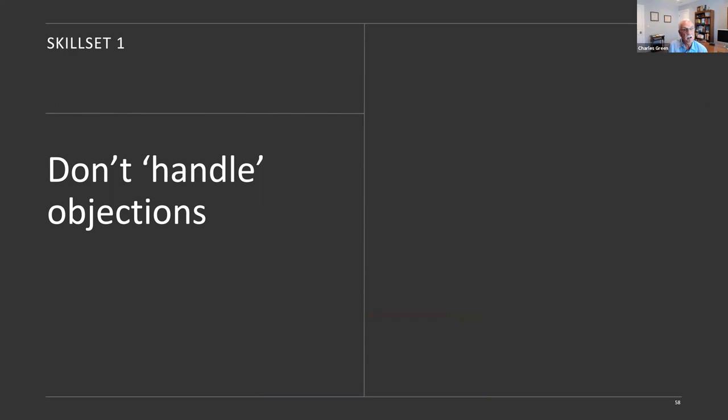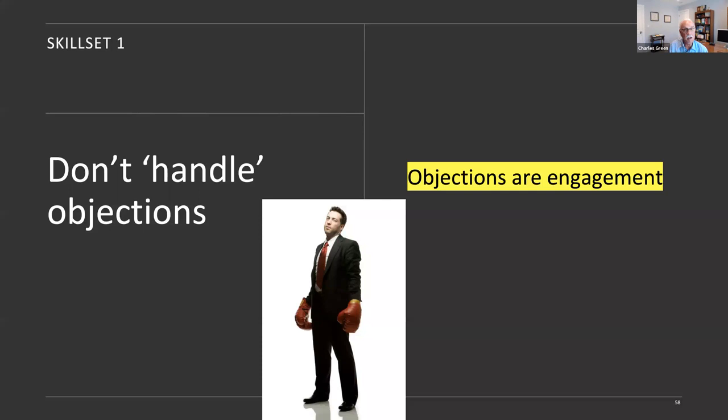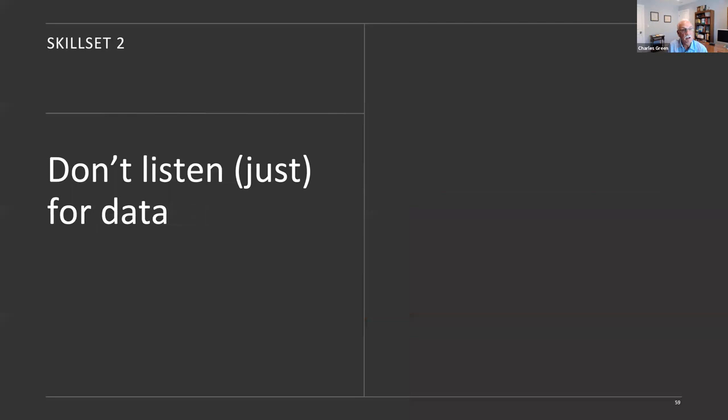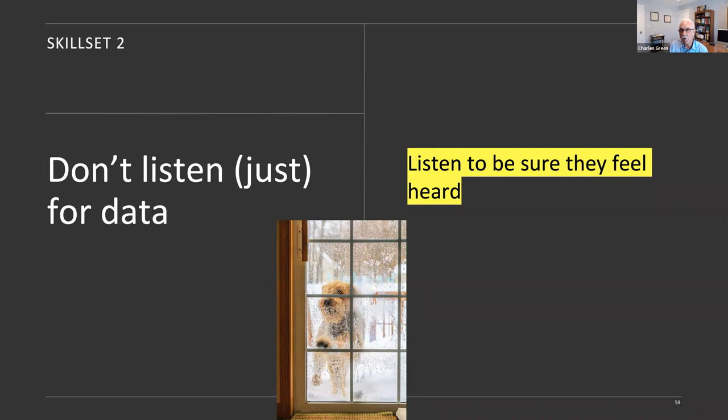There's a few key skill sets like don't handle objections because objections, frankly, are engagement. Don't think of them as combative and how to counter them. Think of that as an invitation to keep engaged. The real problem is not objections, it's disengagement. Another big skill set, don't listen just for data. Don't listen just to prove a hypothesis. Listen instead so that the other person feels heard. There's a natural human reaction. If they feel heard, they're going to respond then by becoming interested in what you have to say, but not until they feel you've listened to them.